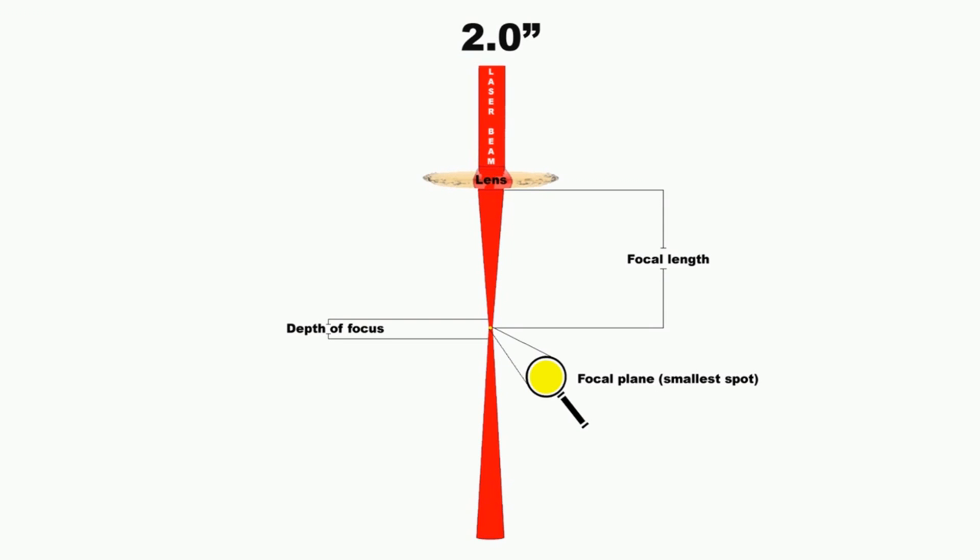In other words, if you're a bit higher or lower than the focus point, but within the depth of focus, you will generally not see much difference when engraving. So for the 2-inch lens, the depth of focus is an average of plus or minus 1.5 millimeters or 0.06 inches, which is a total range of 3 millimeters or 0.12 inches.